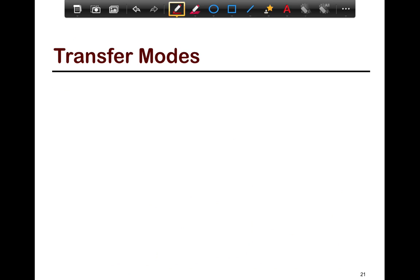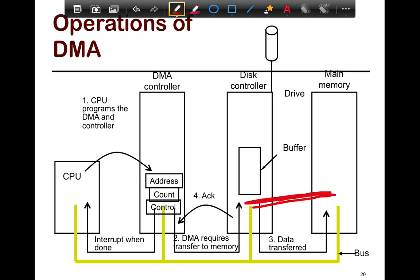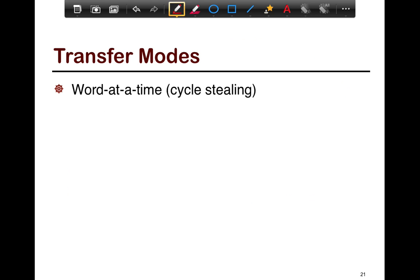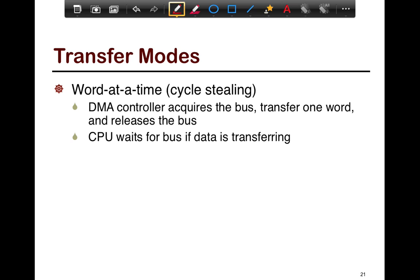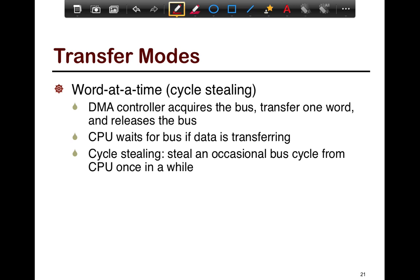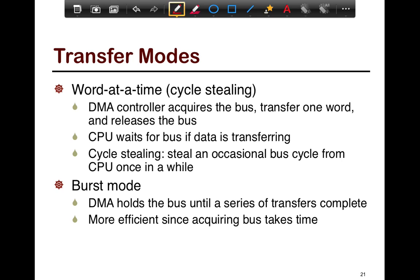DMAs share the memory bus, so both the DMA and the CPU talk to main memory. This shared bus becomes a contended resource, and DMA operates in two modes. The first is word-at-a-time or cycle stealing, where the DMA acquires the bus, transfers a word, and releases the bus immediately — occasionally stealing a bus cycle from the CPU. Burst mode is where the DMA holds the bus for a series of transfers. This is more efficient since it reduces arbitration cost, but it locks down the bus and may delay critical CPU memory accesses.